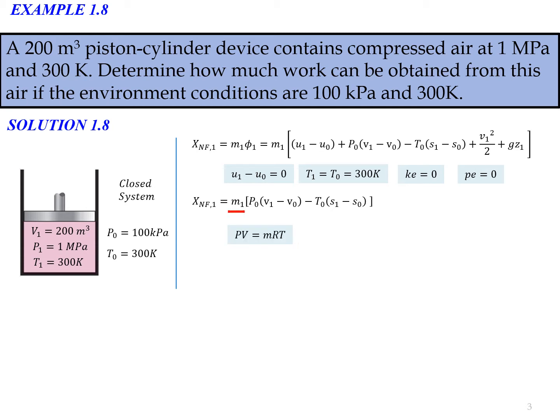We already simplified the equation. Now we look at m₁, which we calculate from PV = mRT, rearranged to m = PV/RT. Here R is equal to 0.287. From the equation, m₁ equals P₁V₁ divided by RT₁, and the value is equal to 23.23 kg.